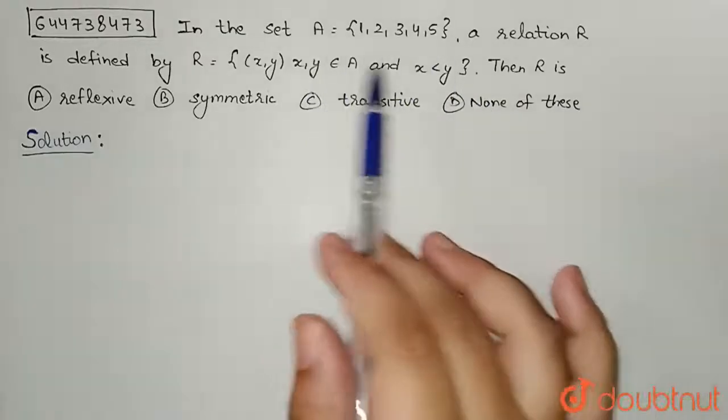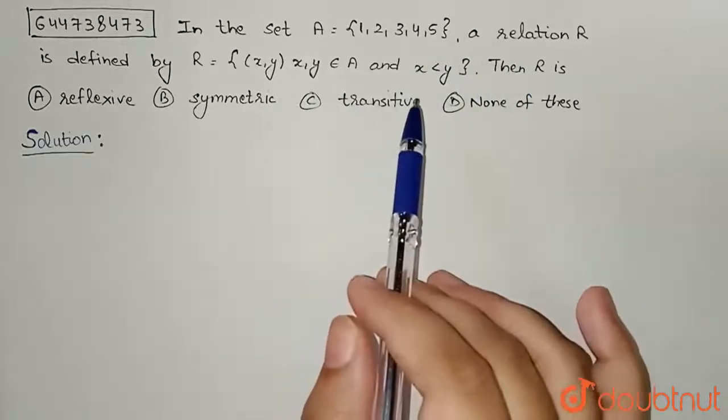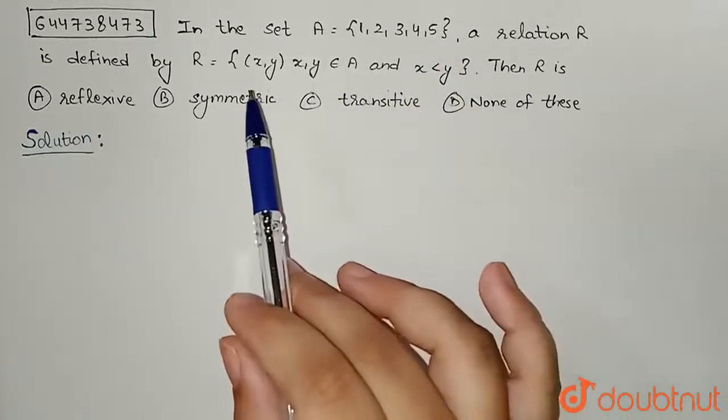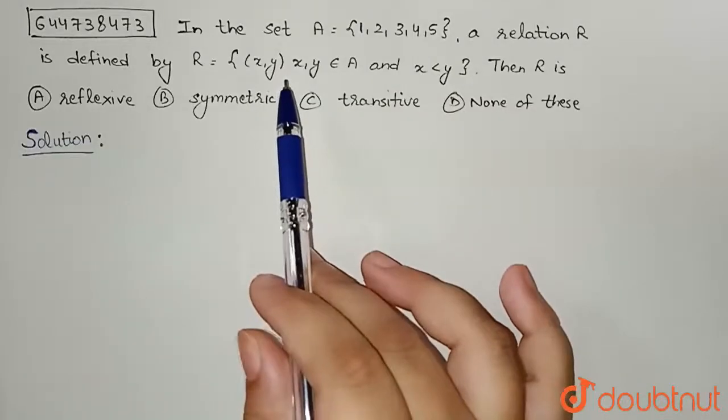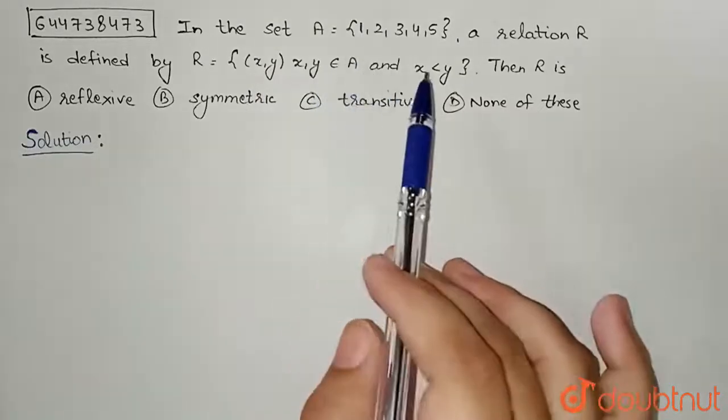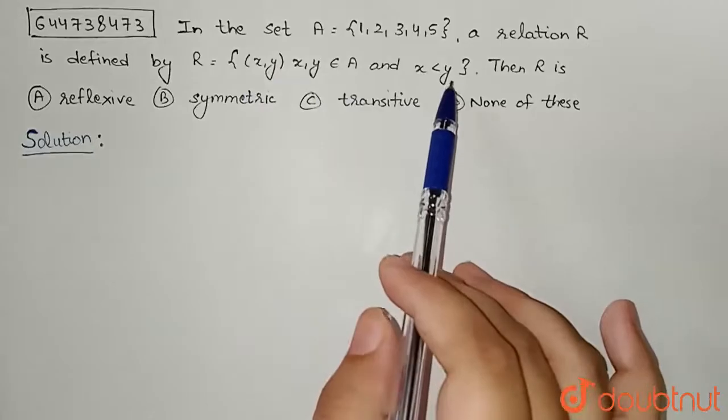So in this question we are given a set A and a relation R is defined on it in which only the elements x, y will be present and these two belong to A, and the condition is x is less than y.